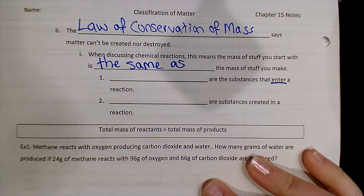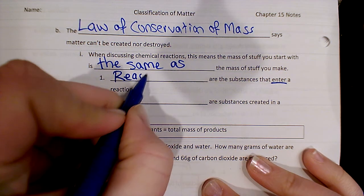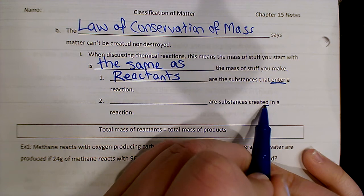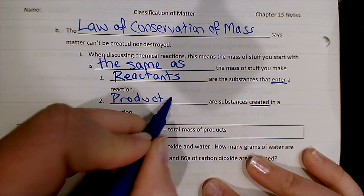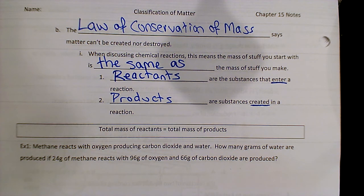And we have names that we use for the stuff we use versus the stuff we make. So the stuff that we use in a reaction, the stuff that enters a reaction, we call the reactants. And the stuff that we create are called products. Reactants react to produce products is one way we can try to remember.